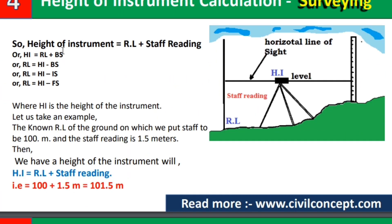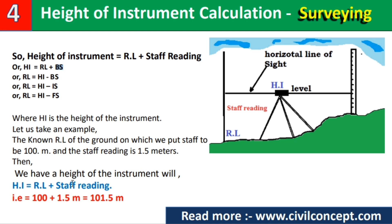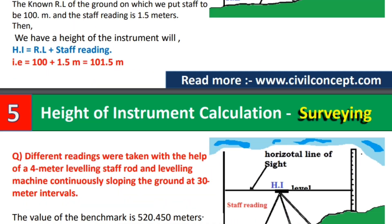To calculate the height of instrument, the formula is: HI = RL + staff reading, where staff reading can be BS, IS, or FS. So HI = RL + BS. Rearranging: RL = HI − staff reading. For example, if the reduced level (RL) of the ground is 100 meters and the staff reading is 1.5 meters, then HI = 100 + 1.5 = 101.5 meters.